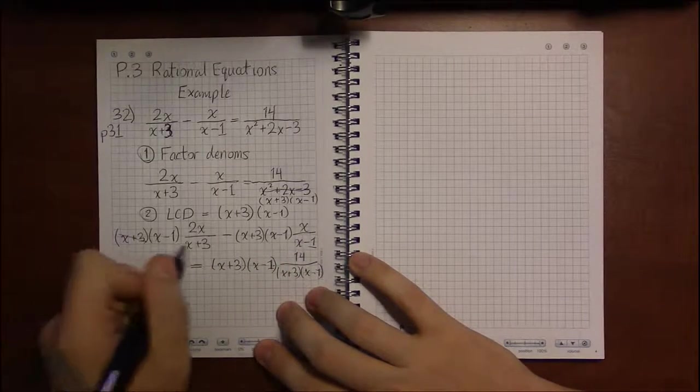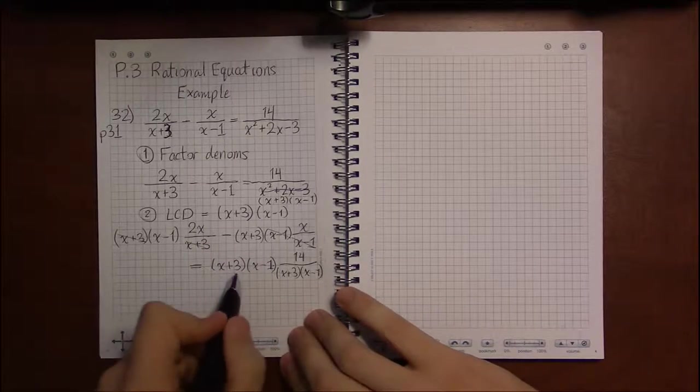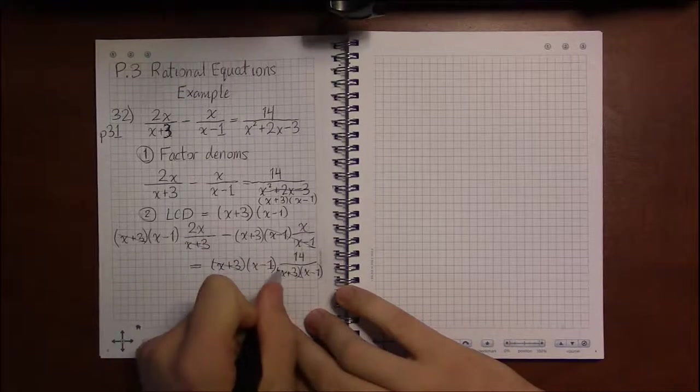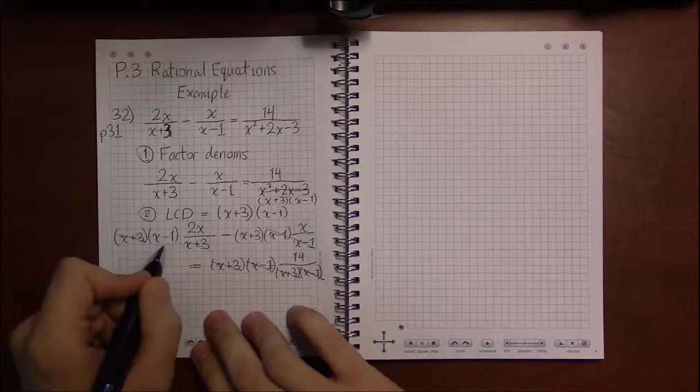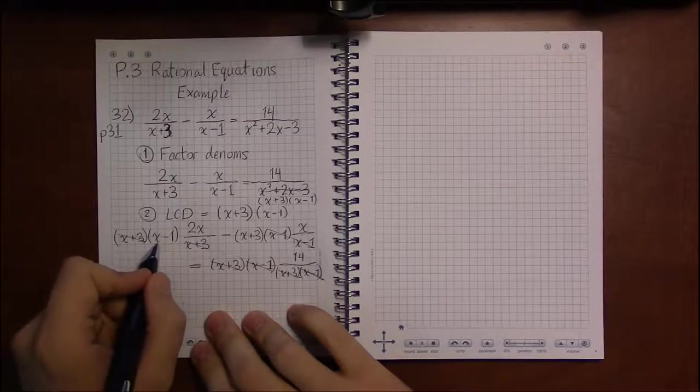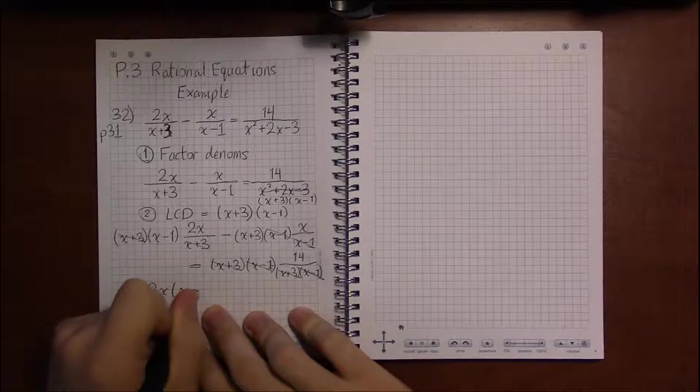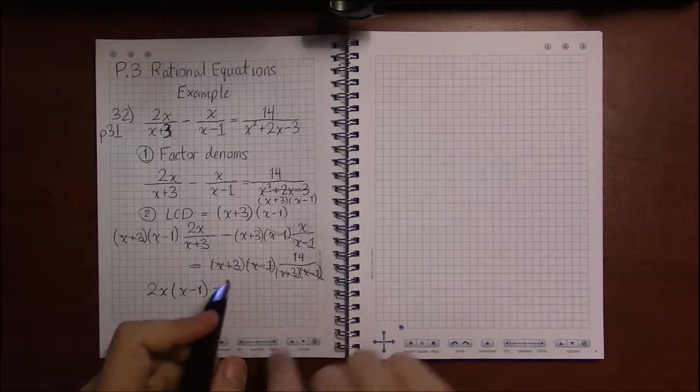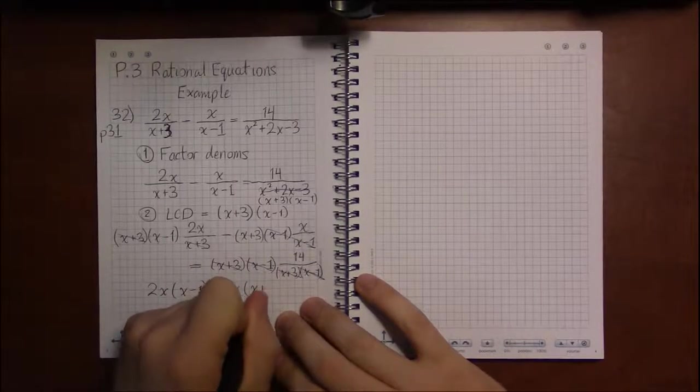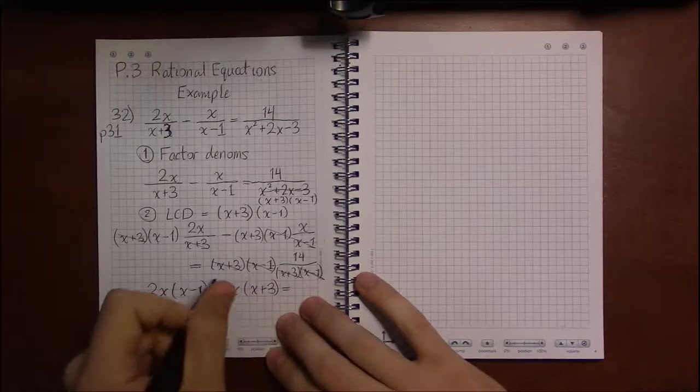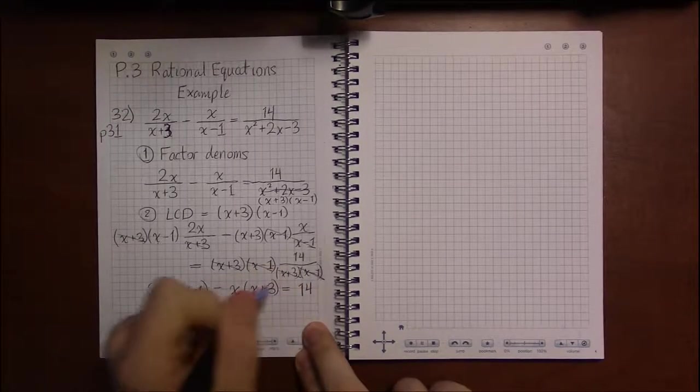And let's see what cancels. First term, the x plus 3s will cancel. In the second term, the x minus 1s will cancel. And in the last term, we've got x plus 3s canceling and x minus 1s canceling. So very nice. What are we left with in the first term? Well, x minus 1 times 2x. We can write that as 2x times x minus 1. What's left over on the second term? x plus 3 times an x. So we can write that as x times x plus 3. And what do we have left over on the right? Well, not much, just the 14.